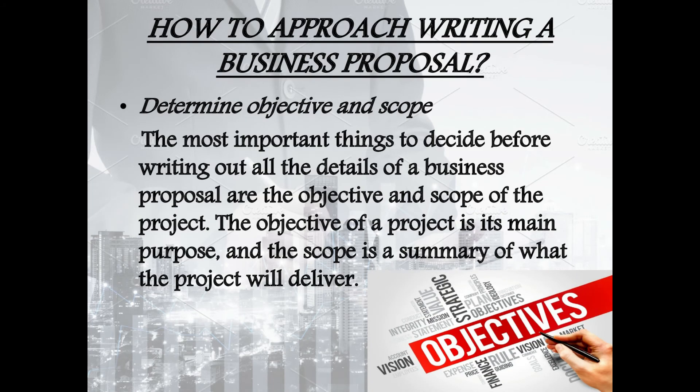How to approach writing a business proposal? Determine objective and scope: the most important things to decide before writing out all the details of a business proposal are the objective and scope of the project. The objective of a project is its main purpose, and the scope is a summary of what the project will deliver.